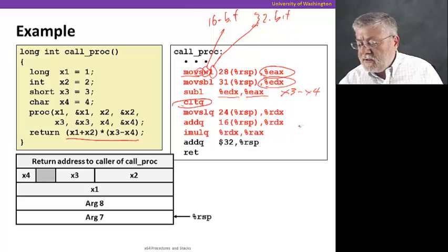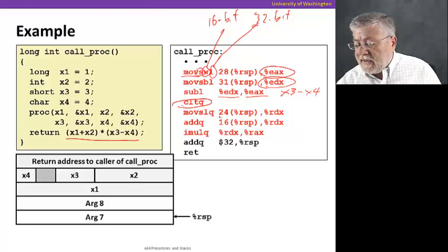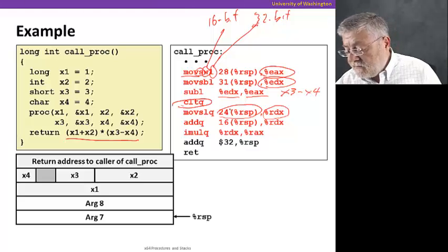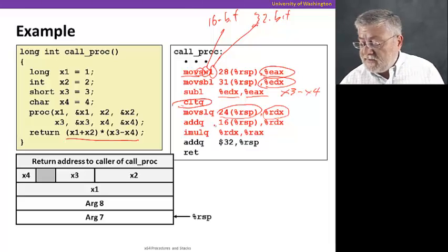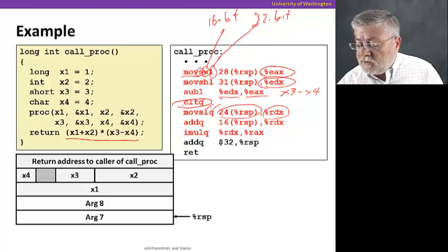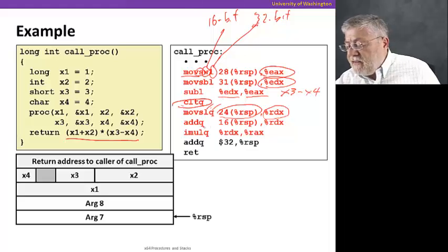The next part computes, as you can imagine, X1 plus X2. And it does that by getting the value of X2, moving it into RDX and sign extending it to 64 bits. In this case, from a long to a quad.